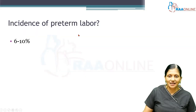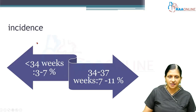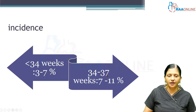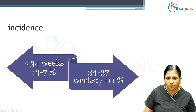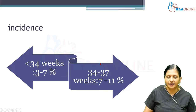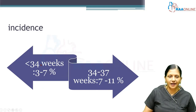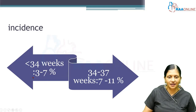The incidence of preterm labor is 6 to 10% of all pregnancies. Preterm labor can be late preterm, at 34 to 37 weeks, or early preterm, at less than 34 weeks. Late preterm baby mortality is less because the baby is relatively more mature. Late preterm incidence is 7 to 11%, and early preterm incidence is 3 to 7%. Early preterm is more dangerous but less common; late preterm is less dangerous but more common.